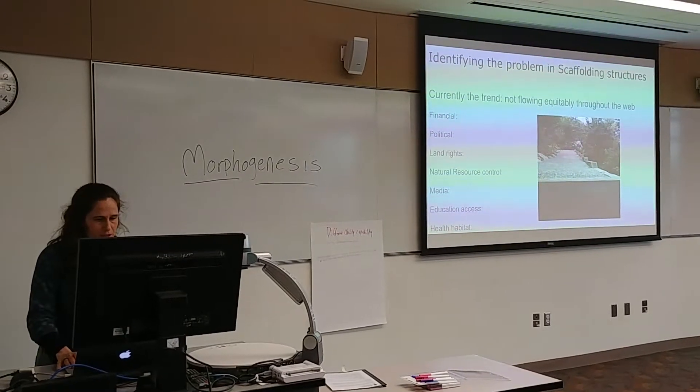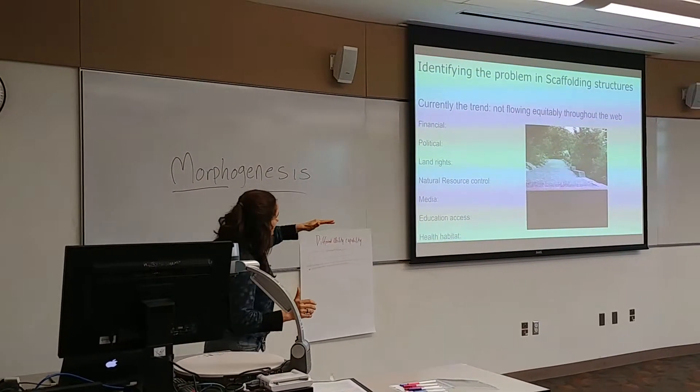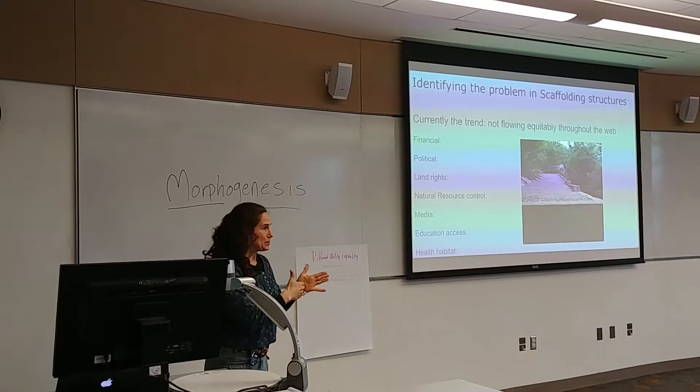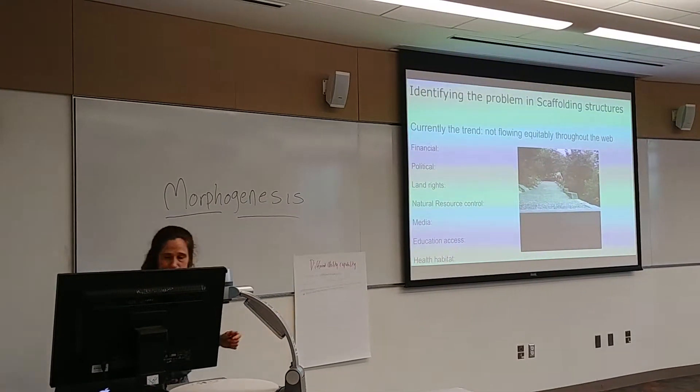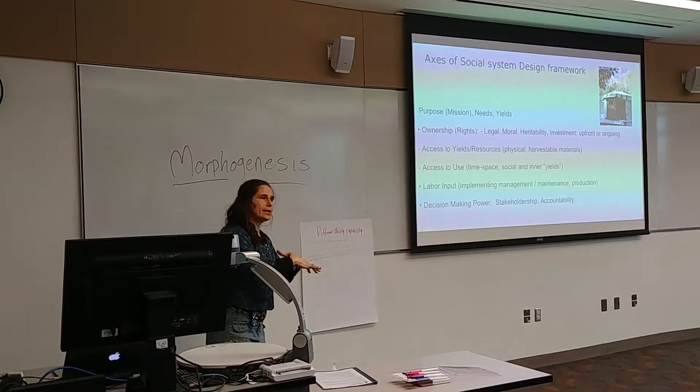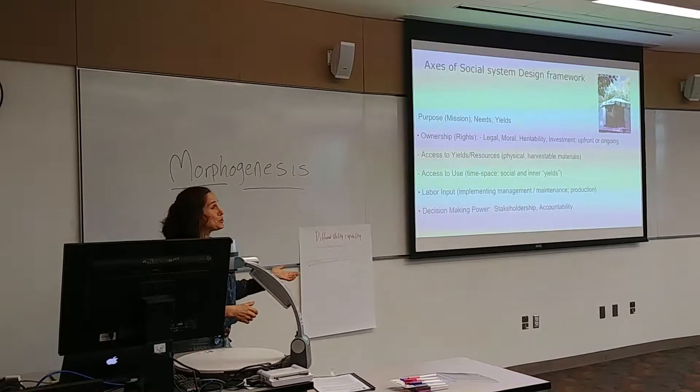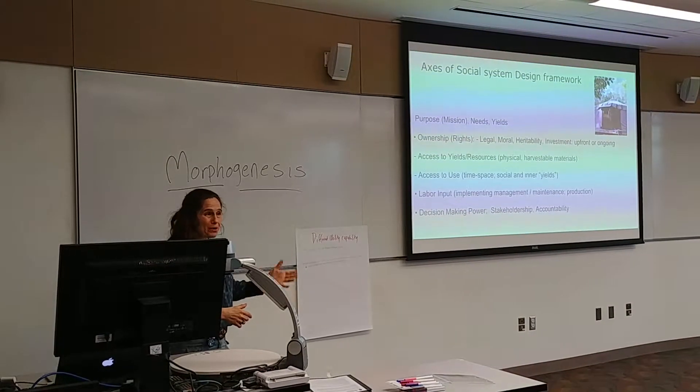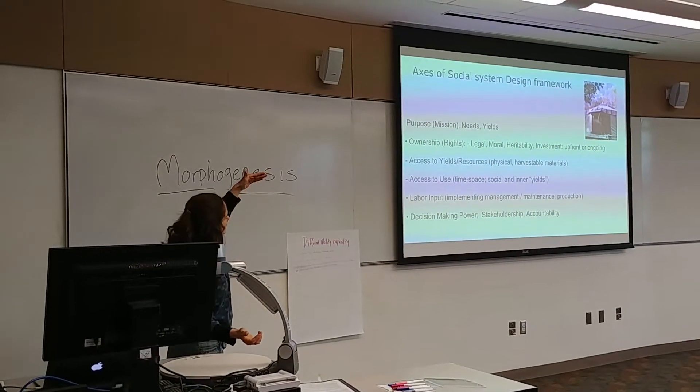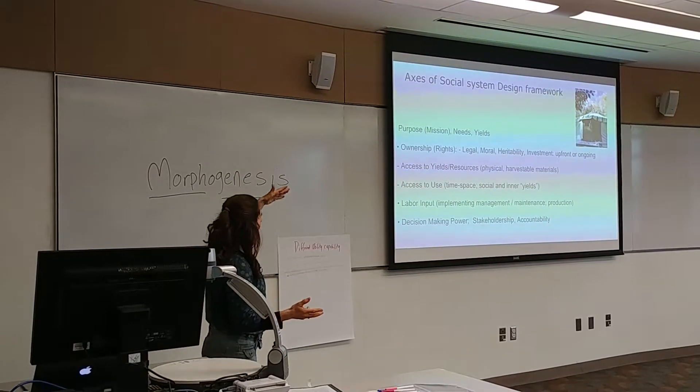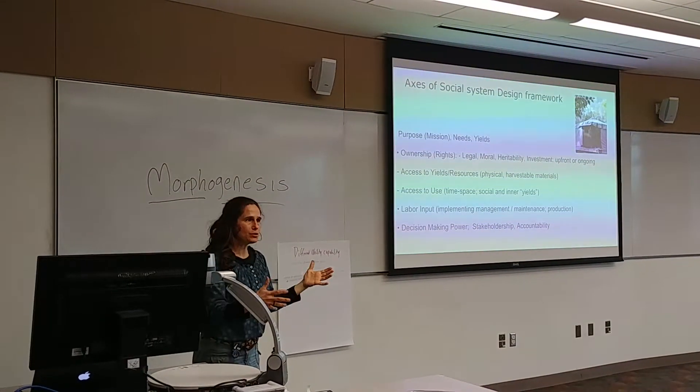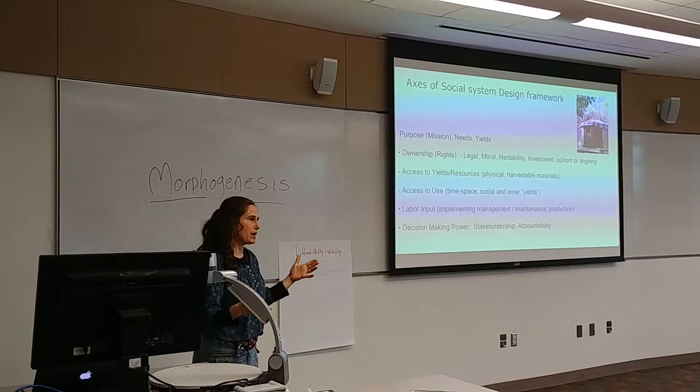We're not going to go through this too much, but just this idea that it's kind of like a dead end if you do not recognize these structures and try to change them or transform them, because the energy just stops, the flow just stops. When you're looking at ecological design or social structure design, you can go through a similar process, thinking of the purpose and mission and needs of that group of people or society, and going through ownership and all the invisible structures, these scaffolding structures, labor input, decision-making power. All of a sudden you can really see where the problems of inequity might be, where you might want to make design changes.